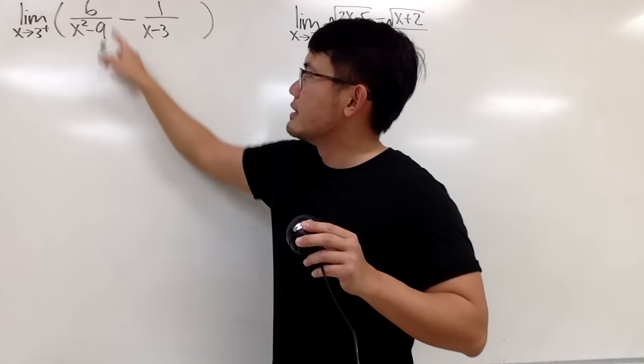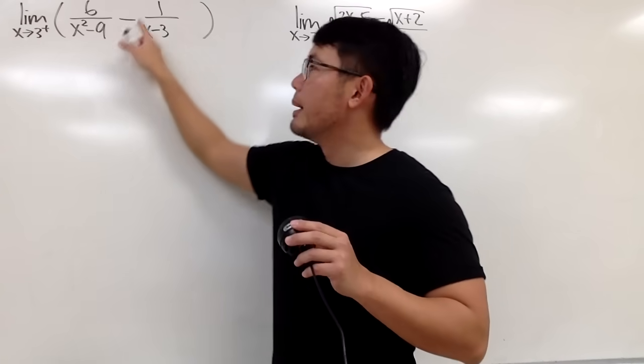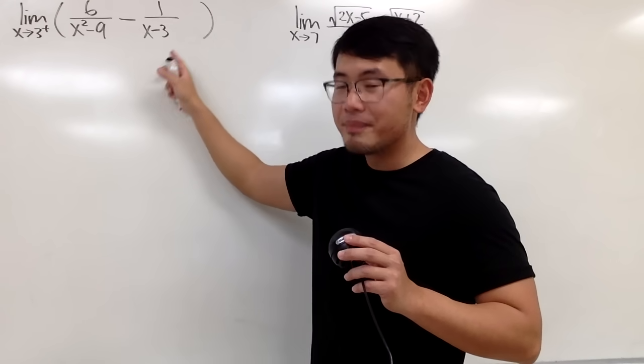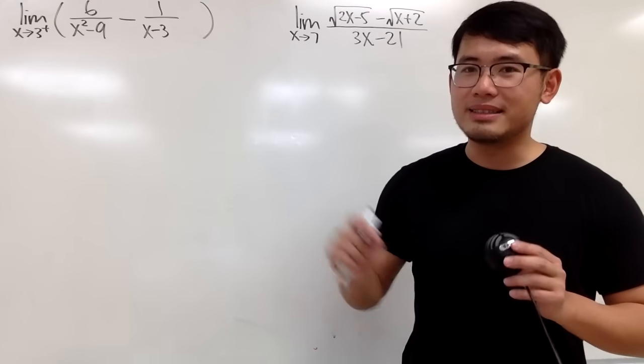If you put 3 plus into all the x, first you get 6 over 0 plus, which is infinity, minus you also end up with 1 over 0 plus, which is also infinity. Infinity minus infinity, we have to do more work because that's an indeterminate form.